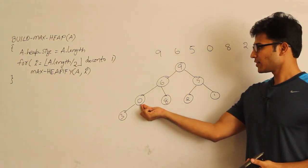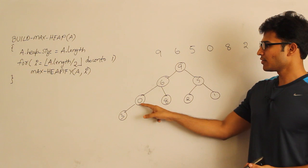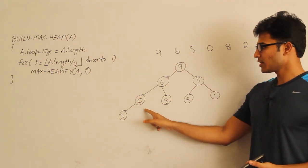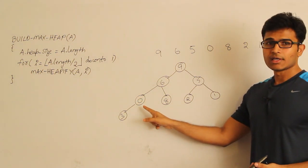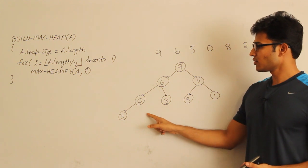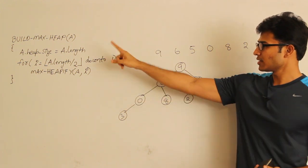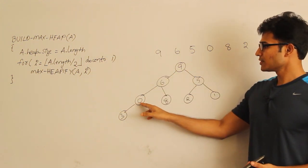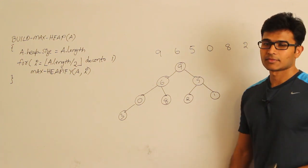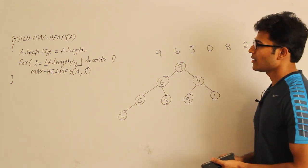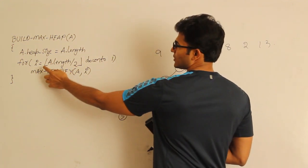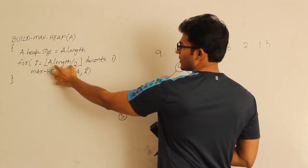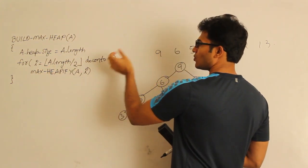Let's say we've reached a certain index — it has a left child but not a right child. To know that the right child is not there, we set the heap size to eight; otherwise the algorithm will try to refer to index nine. The for loop runs from a.length divided by two, down to one.